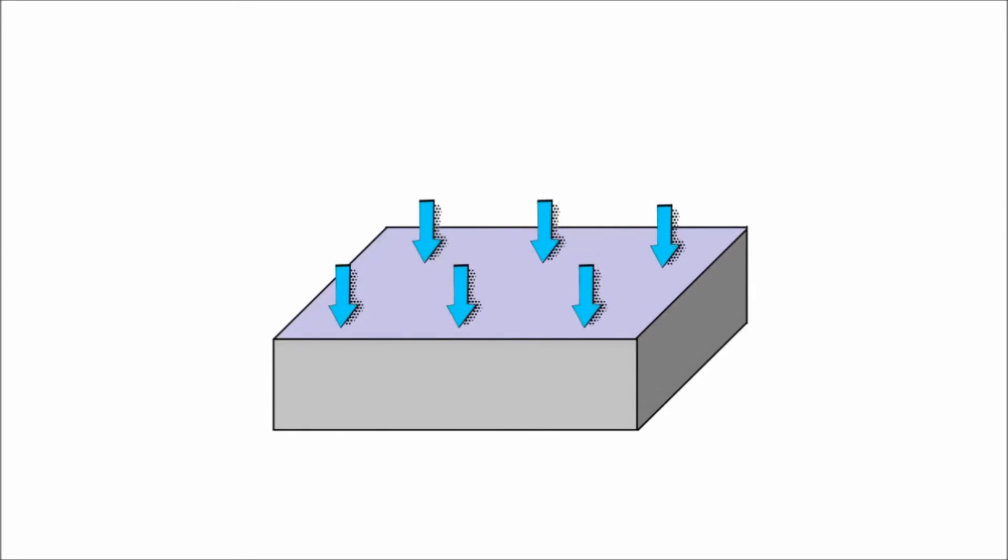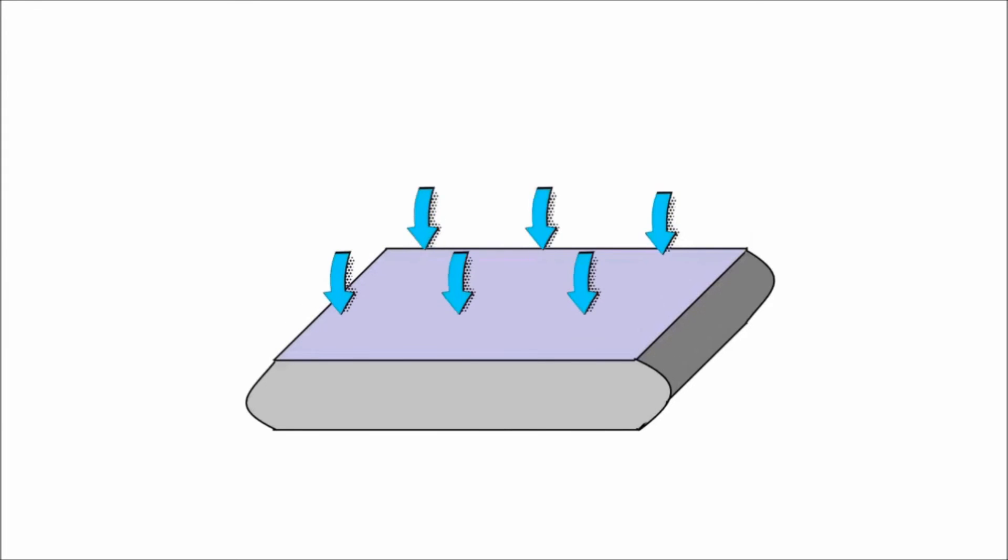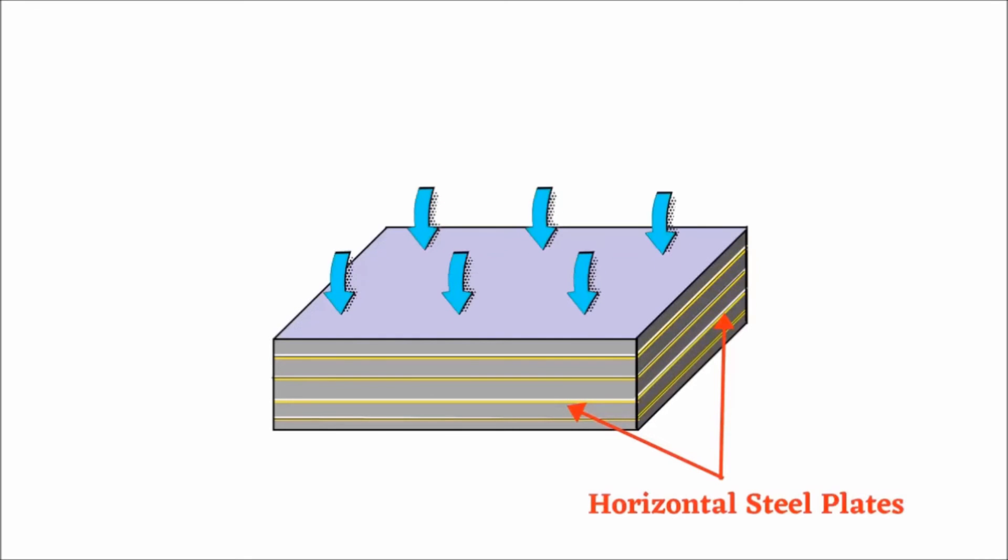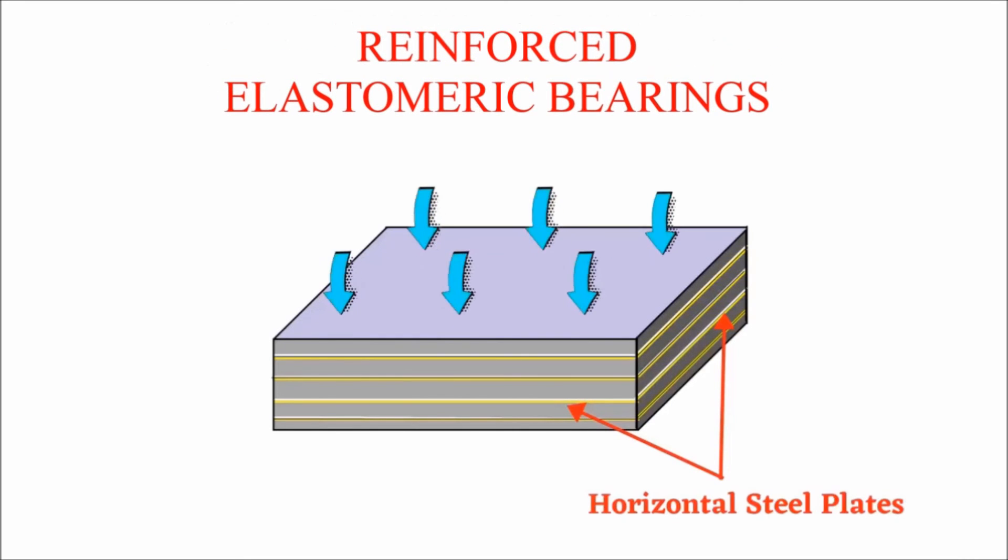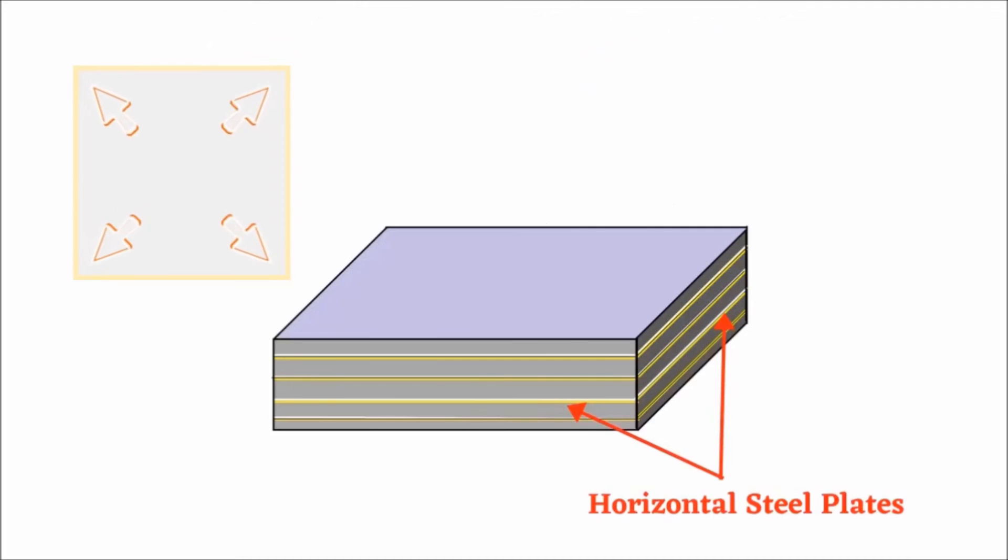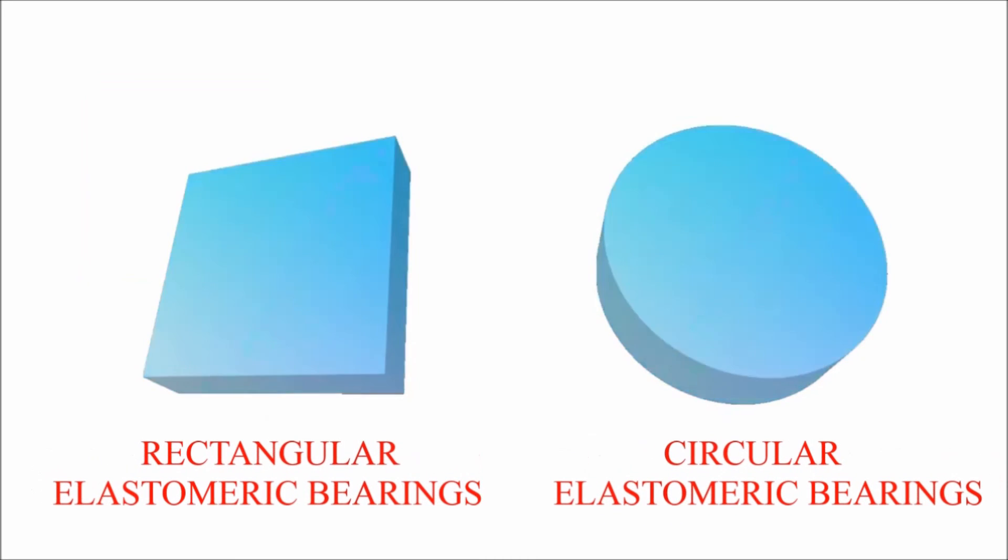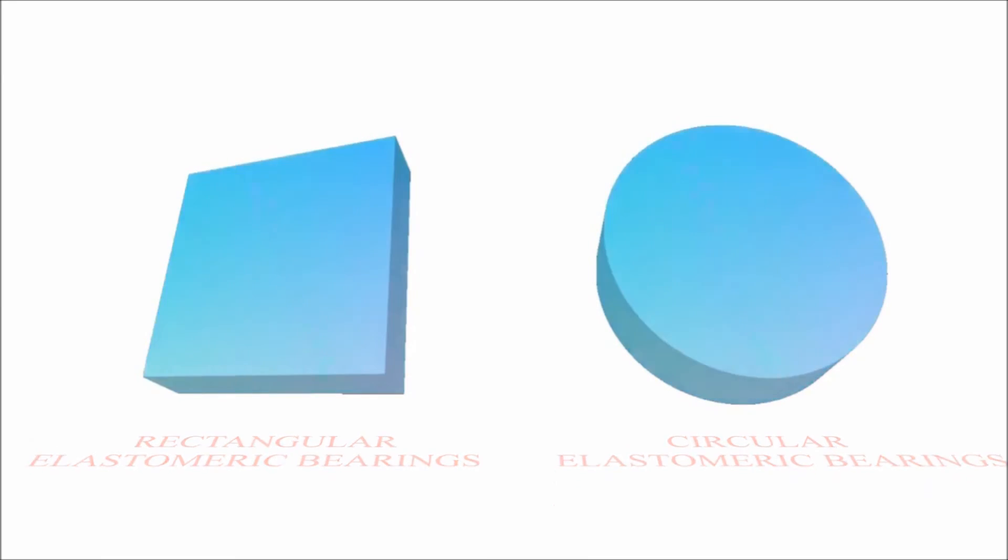Under heavy load, the deformation of elastomeric pad exceeds its allowable limit, which can cause bulging. To prevent this type of bulging, horizontal steel plates are provided. The thickness and number of plates depends on the magnitude of vertical loads. Elastomeric bearings can be rectangular or circular in shape depending on design calculations.